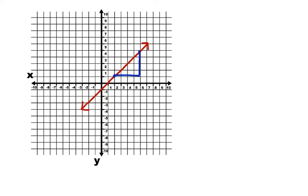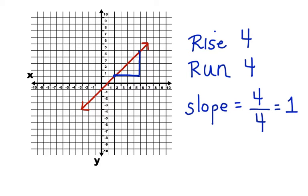So we have a rise of positive 4, and we have a run of positive 4 as well. Here's the slope of the line. We put the rise over the run and divide. This line has a slope of positive 1.